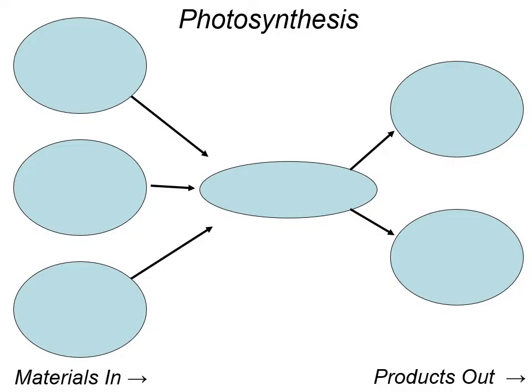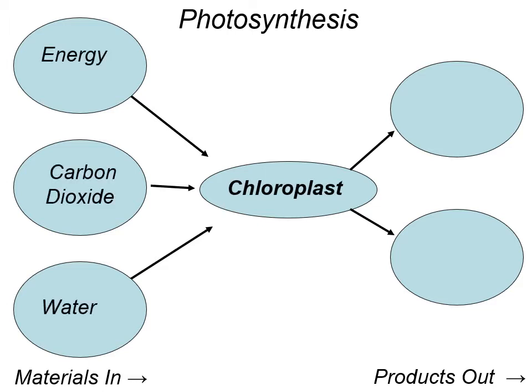Here's a simple graphic of that process, which is also in your notes. The materials going into the chloroplasts are energy, carbon dioxide, and water. Photosynthesis occurs, and the products that come out are glucose and oxygen. This simple graphic shows that process.